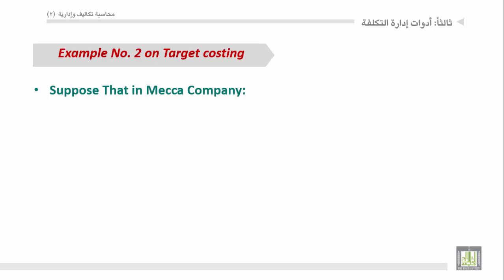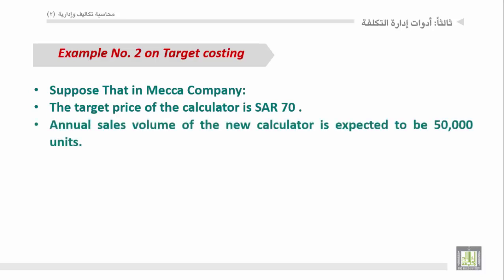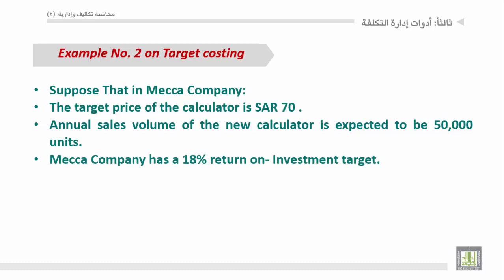Suppose that in Mecca Company, the target price of the calculator is 70 SR. Annual sales volume of the new calculator is expected to be 50,000 units. تقريبا نفس المثال الأول ولكن من زاوية مختلفة. Mecca Company has an 18% return on investment target - عائد على الاستثمار المستهدف 18%. وكان عائد على المبيعات.